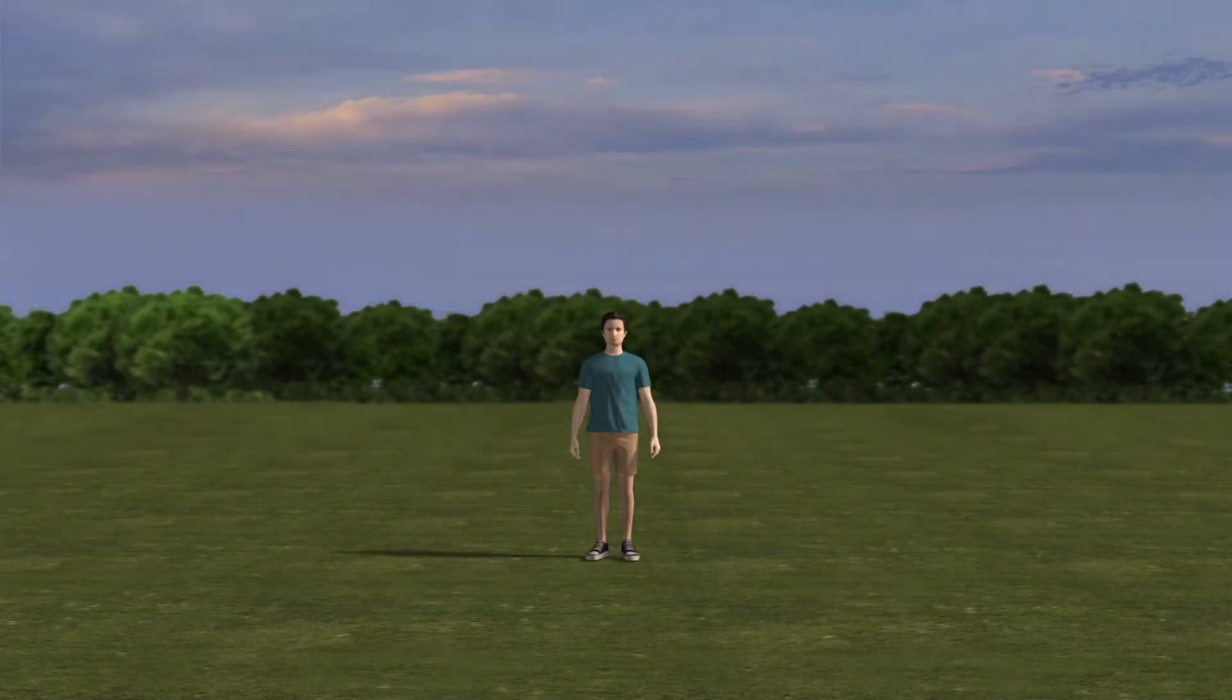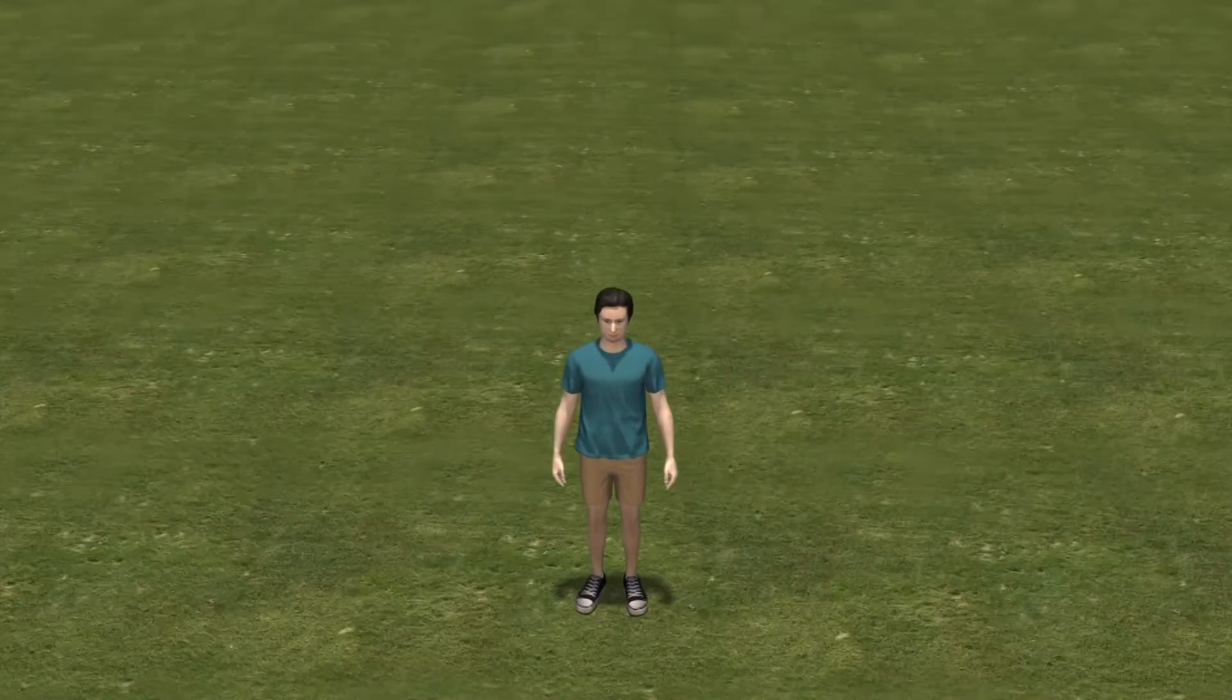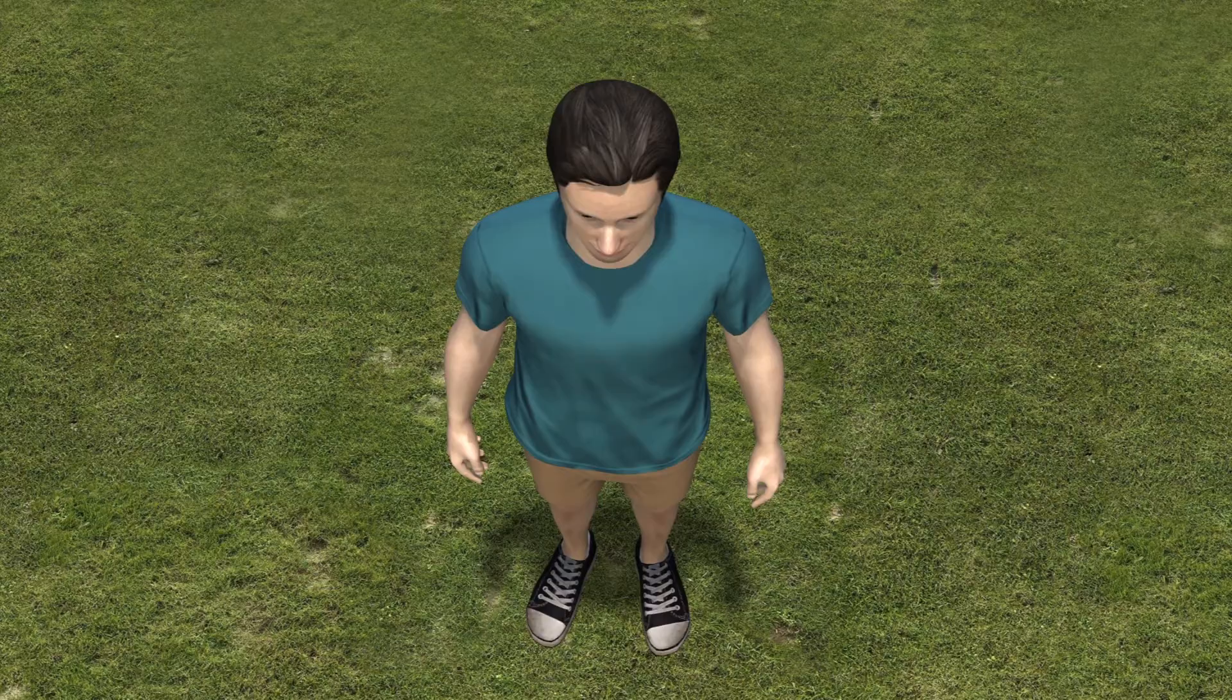Anyone standing right on the Tropic of Cancer at noon on Solstice Day will see the Sun directly overhead and find themselves casting a very minimal shadow.